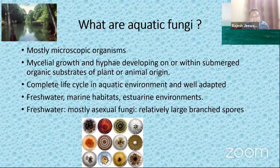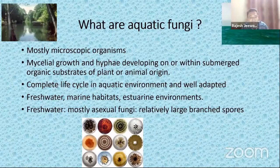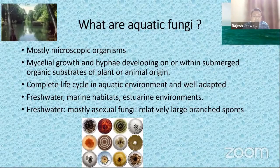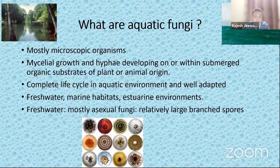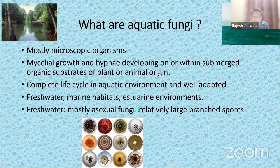Surprisingly, these fungi are very well adapted to live in the aquatic environment. You can find them in freshwater, in marine habitats, in deep seas, and in estuarine environments as well. Freshwater fungi are mostly asexual fungi and they've got relatively large branched spores. Those spores are basically reproductive structures, and you can also grow those asexual fungi in the lab in vitro, especially on plates.